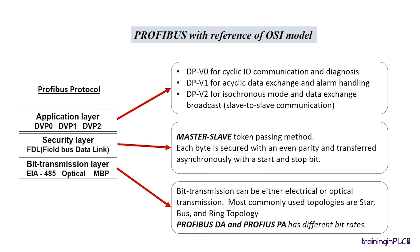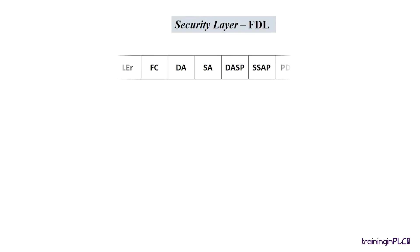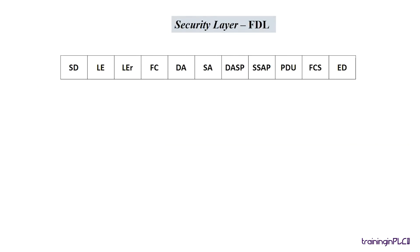PROFIBUS DP and PROFIBUS PA have different bit rates. The data is transmitted in byte format, and each byte is secured with even parity and transferred asynchronously with a start and stop bit.